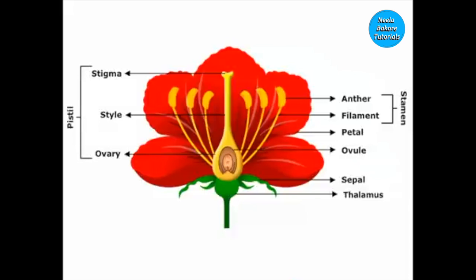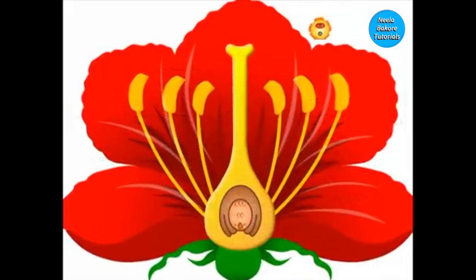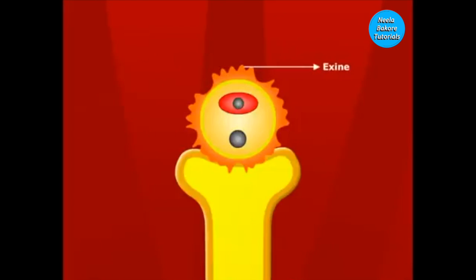In the ovary are ovules. In an ovule is an embryo sac, and in the embryo sac is an egg. During pollination, the pollen grain comes to lie on the stigma. The pollen grain has two layers.